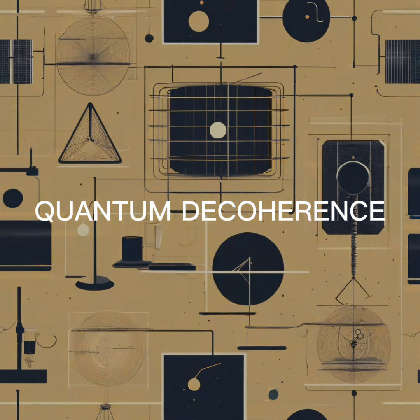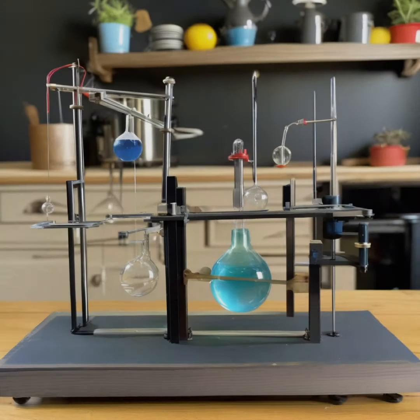Quantum decoherence describes how quantum superpositions collapse into definite states as a quantum system interacts with its environment. It helps explain why we don't observe everyday objects in superposition states.